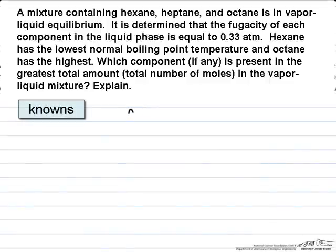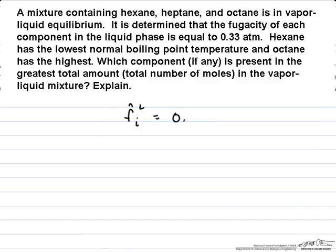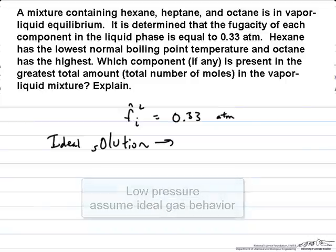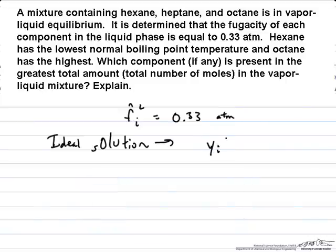So if we are given that the fugacity of the liquid in this mixture is equal to 0.33 atmospheres for all three components, that means we can write three different equations assuming an ideal solution using Raoult's law. We know that we are dealing with pressures in the atmospheric range, so we expect ideal gas behavior and ideal solution behavior, and so Raoult's law seems like a good assumption.